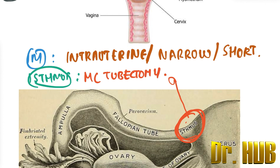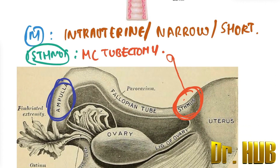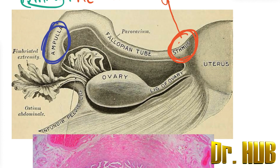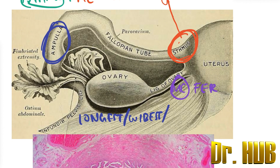The ampulla is the longest and widest part of the fallopian tube. It is also the most common site for fertilization and ectopic pregnancy.